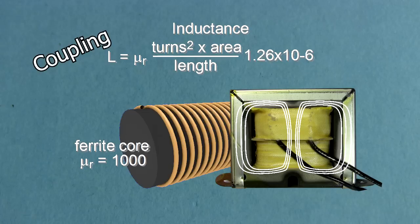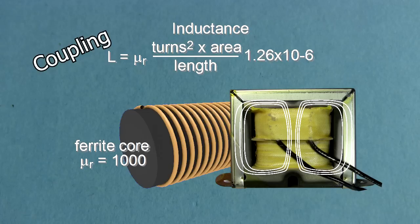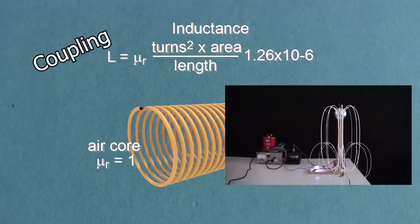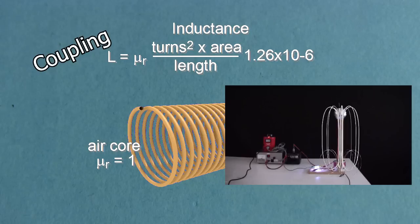Also, in step up or step down transformers, you want a solid core so that the magnetic field efficiently couples with the secondary coil. But with something like a Tesla coil, you want air cores so that the coupling between the primary and secondary is less.